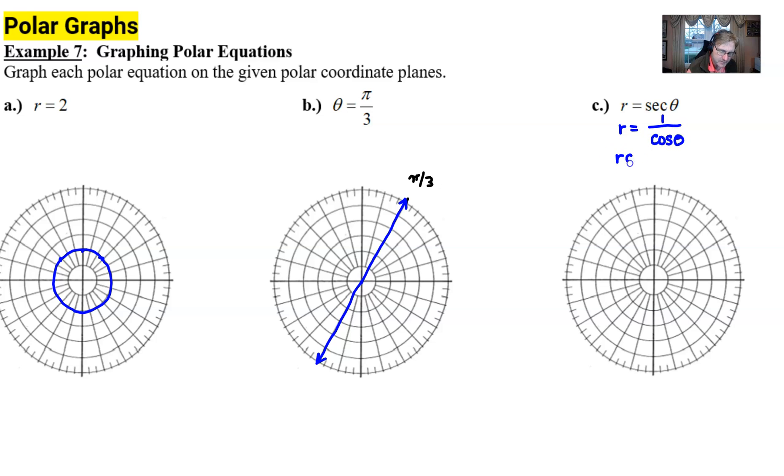If you cross multiply, r cosine theta equals 1, you find yourself saying, well, r cosine theta looks familiar. That's x. So x equals 1. You've got your vertical line, which is tough to sketch without those rectangular grid boxes. But that does about as good a job as any to depict what r equals secant theta looks like.